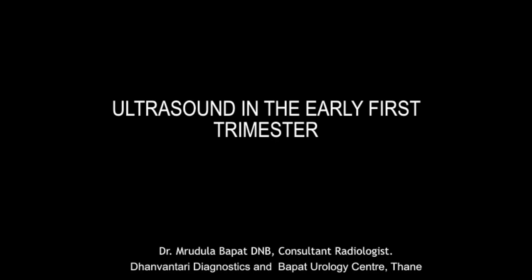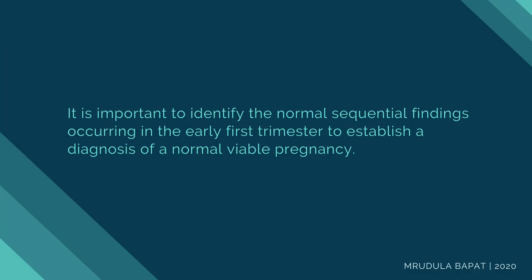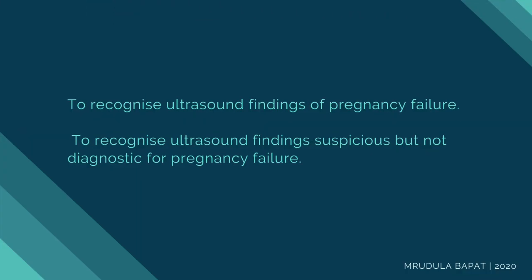The aim of this presentation is to highlight the normal events that occur sequentially in the early first trimester. We all know that the first trimester is the period of rapid changes that begin with fertilization, formation of the blastocyst, implantation of the blastocyst, the embryonic period, and early fetal life up to 12 weeks. It's important to identify normal sequential findings to establish a diagnosis of a normal viable pregnancy, and also to recognize findings of pregnancy failure and those which are suspicious but not diagnostic of early pregnancy failure.